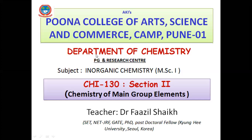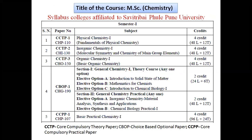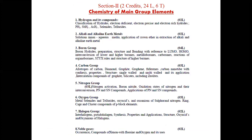Good afternoon, welcome back to the topic discussion: Chemistry of Main Group Elements. It is part of vapor inorganic chemistry CHI-130 for MSc first semester. There are two sections: section one is composed of molecular symmetry and its application, which is for two credits, and section two is about the chemistry of main group elements, hydrogen and its compounds.